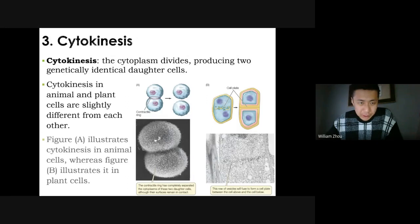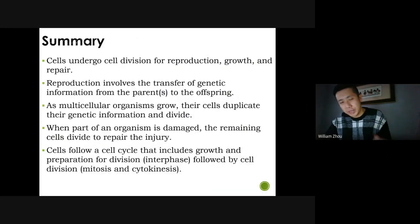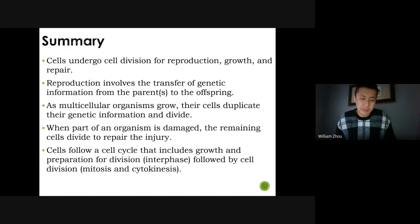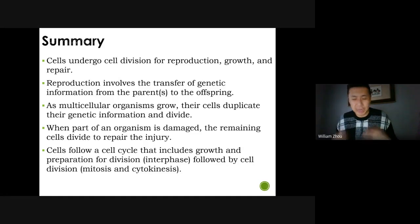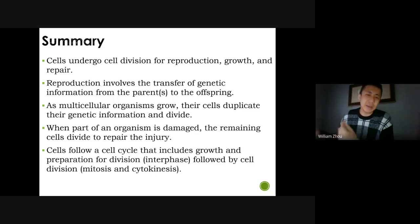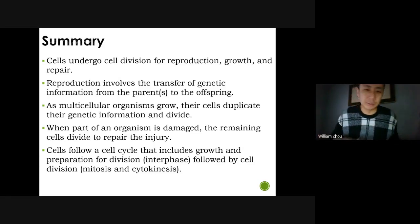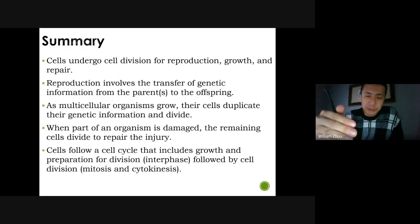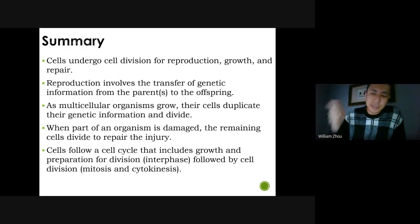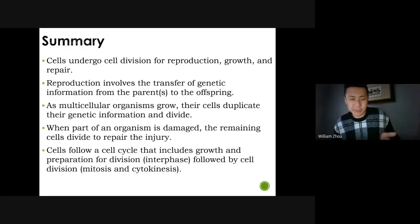To summarize: today we learned the cell cycle — why cells need to reproduce: to reproduce, to grow, and to repair. There's sexual versus asexual reproduction, both of which transfer genetic information from parent to offspring — asexual you do by yourself making a clone, sexual you need a partner with two gametes from different individuals. Mitosis has four phases: prophase, metaphase, anaphase, telophase — then cytokinesis, then back into interphase.